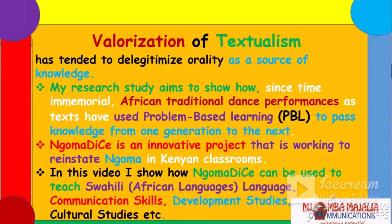The socialization of textualism has tended to delegitimize orality as a source of knowledge. This research study aims to show how, since time immemorial, African traditional dance performances as texts have used problem-based learning to pass knowledge from one generation to the other. These are repositories — the libraries — and there is a lot stored in African traditional dances, including lessons on hunting, farming, and medicinal trees. This study modifies those old forms and brings them back so that we do not lose them — we should not throw the baby out with the bathwater.